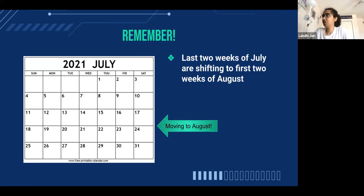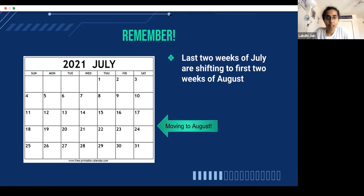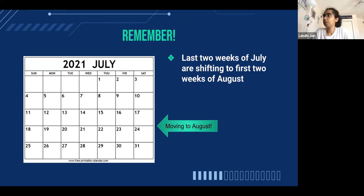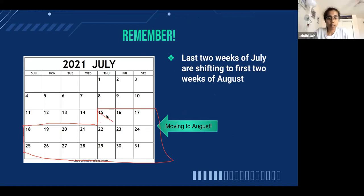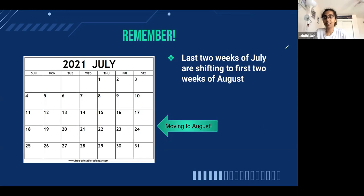For the change in July: the last two weeks of July, including the 15th, will be cancelled and moved to two weeks in August. So the 15th is cancelled and every session in those last two weeks will be moved to August.